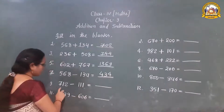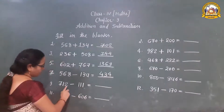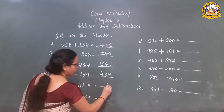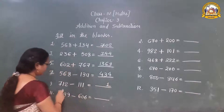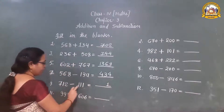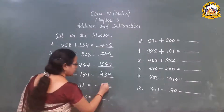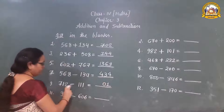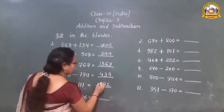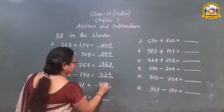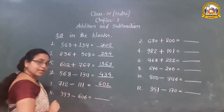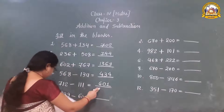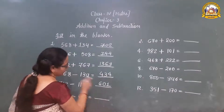Now question number 9. 2 minus 1 is 1. 1 minus 1 is 0. 7 minus 1 is 6. So what's the answer? The answer is 601.